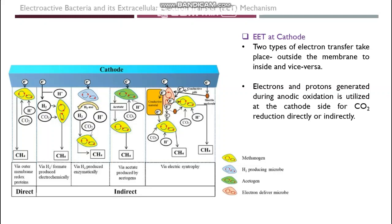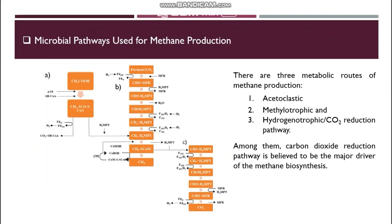Exo-electrogenic species like Methanosarcina and Methanocita, which reduce carbon dioxide to methane, can transfer electrons directly from elemental iron. Any product synthesized inside an organism is a result of a biochemical reaction or pathway involving many metabolic steps. There are three metabolic routes of methane production: acetoclastic, methylotrophic, and hydrogenotrophic/carbon dioxide reduction pathway. Among them, the carbon dioxide reduction pathway is believed to be the major driver of methane biosynthesis, and is around four times more widely observed than both methylotrophic and acetoclastic pathways combined, because carbon dioxide and hydrogen are readily available during hydrogenotrophic methanogenesis.